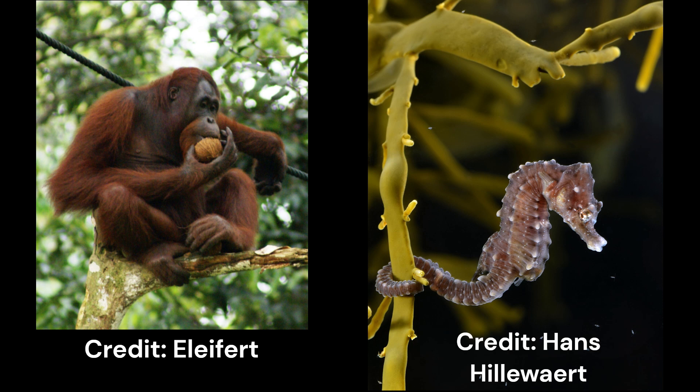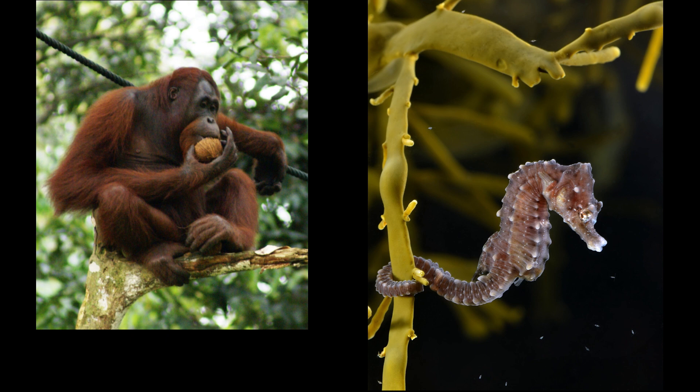In humans, there can be two parents and therefore two roles of parental investment. For example, women may produce a baby inside them. In animals, one gender may play a different role in parental care. For example, female orangutans may give more parental care because orangutans are quite solitary, and male seahorses may carry their young before giving birth. These two different levels of parental investment can lead to two genders being common.